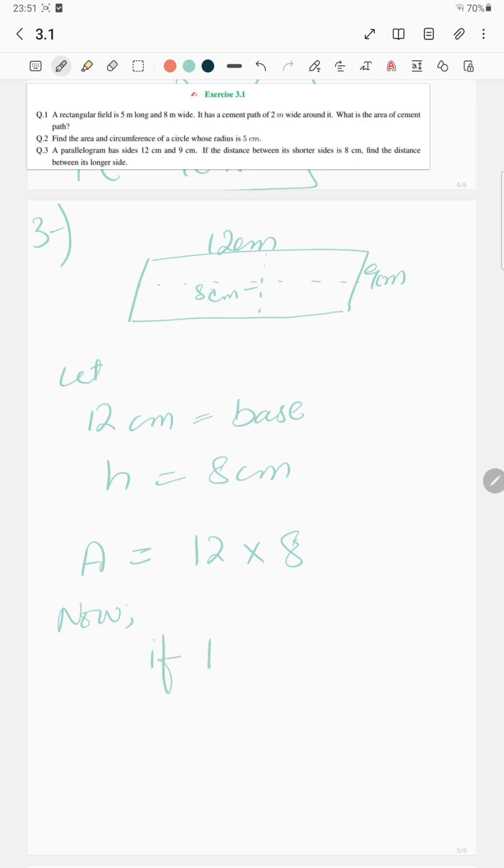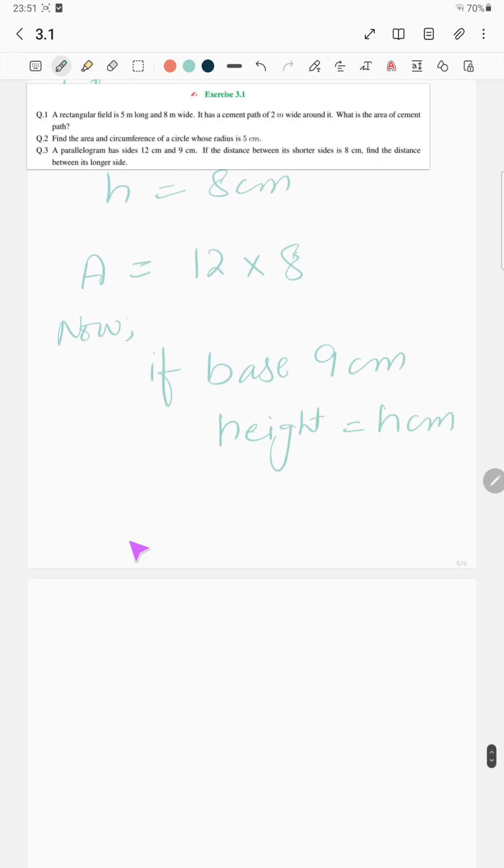if base is 9 centimeter, height is h centimeter, so area is 9 into h. So it's going to be 12 into 8 equals 9 into h.